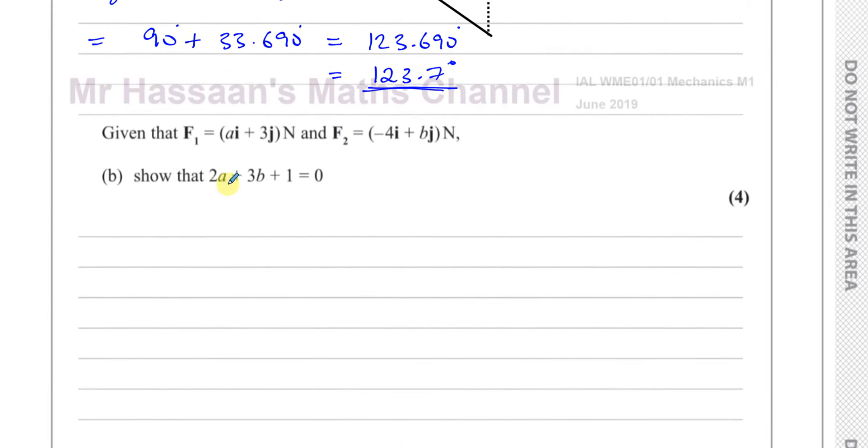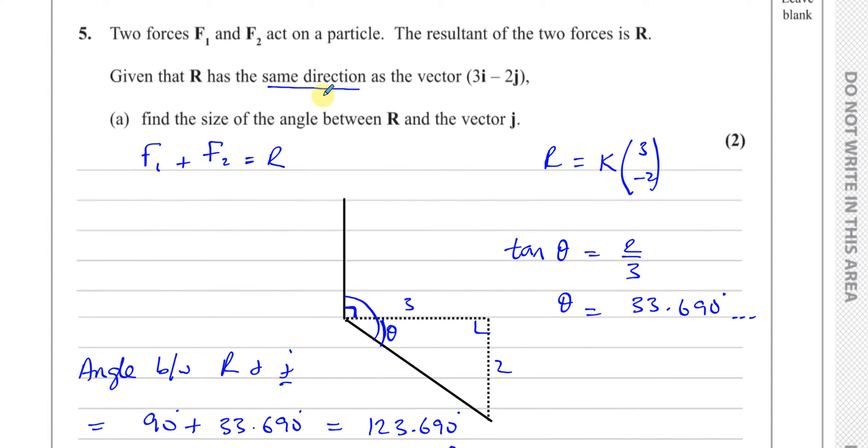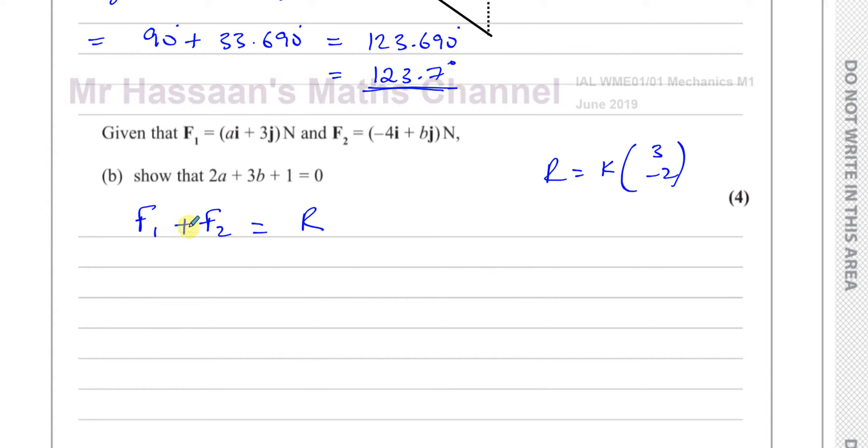Now for part B, it says given that F1 equals ai plus 3j and F2 equals minus 4i plus bj Newtons, show that 2a plus 3b plus 1 equals 0. Now as I've stated above, we know that F1 plus F2, if I add them together, I get the resultant vector, and we know that the resultant vector we've called it K times 3 minus 2, because this is in the same direction as 3i minus 2j. So then I can make a little equation from this. Let's write them as column vectors to make life easy. So you have a plus 3, that's ai plus 3j. If I add to that the vector F2, which is minus 4i plus bj, so it's minus 4 and b, that's equal to the vector R, which is 3K and minus 2K.